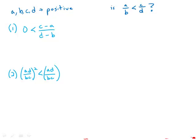So statement number one tells us that the quantity c minus a over d minus b is greater than zero. So we either have to have, to get a positive fraction, we have to have positive over positive, or we have to have negative over negative.